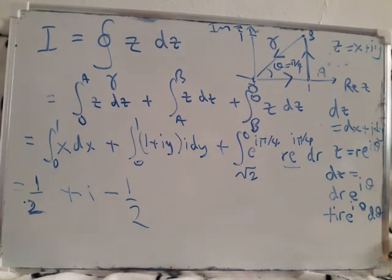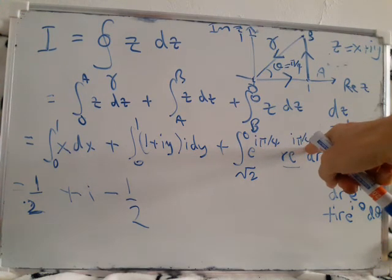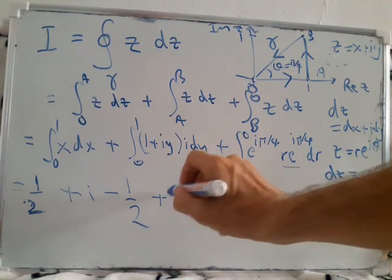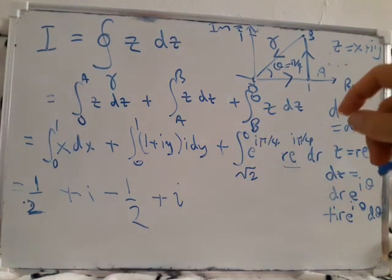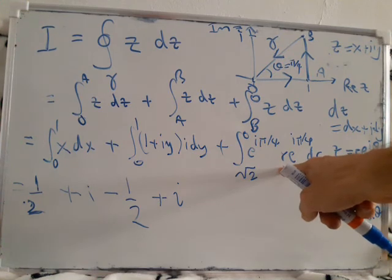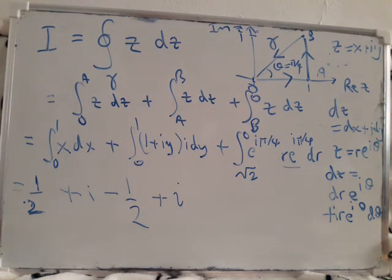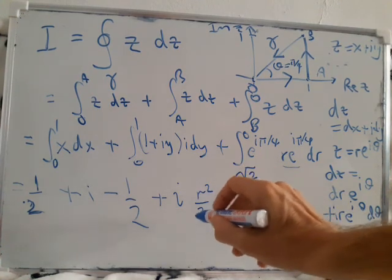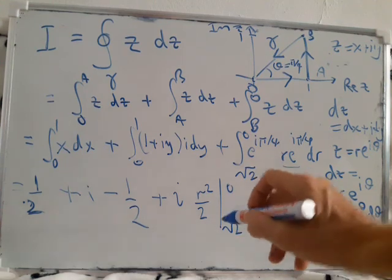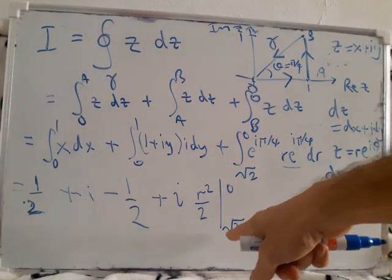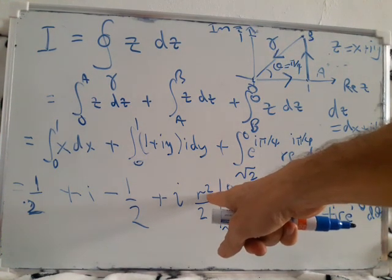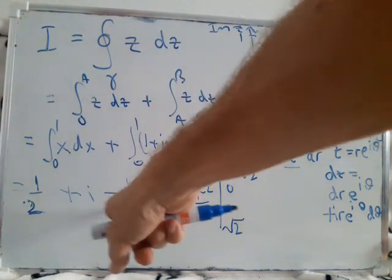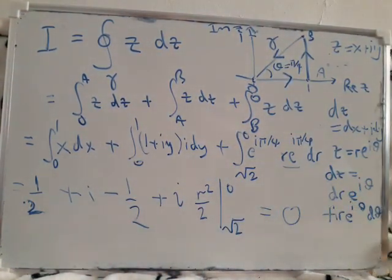And then we've got this bit to finish with. e^(π/4) times e^(π/4) is e^(π/2), which is just i. So we've got plus i. And then r integrates to give (1/2)r². That's evaluated at limits 0 and √2. When we plug in √2, we get minus 2/2. So we get minus i overall. This cancels this, this cancels this, and we get the answer 0 as we expect.